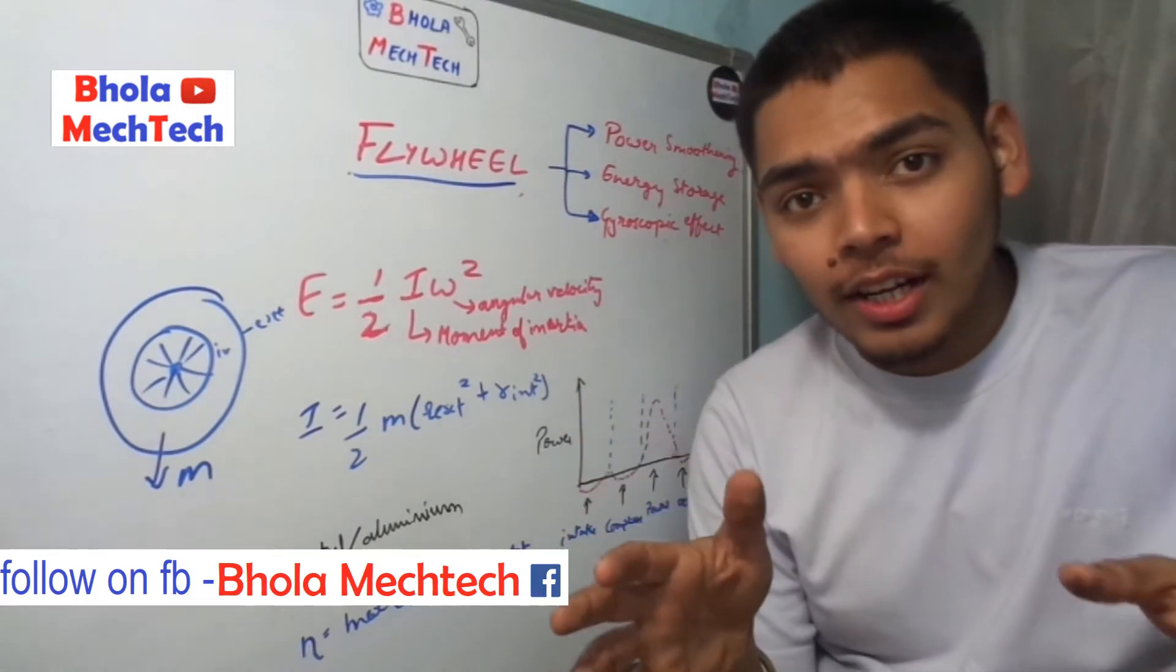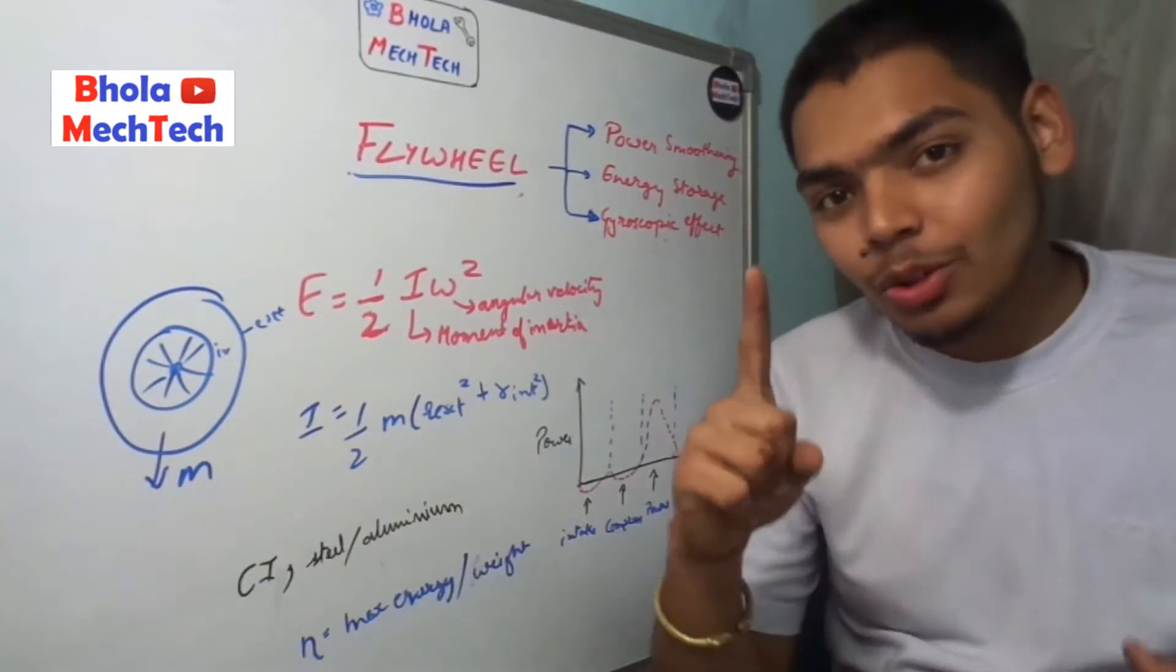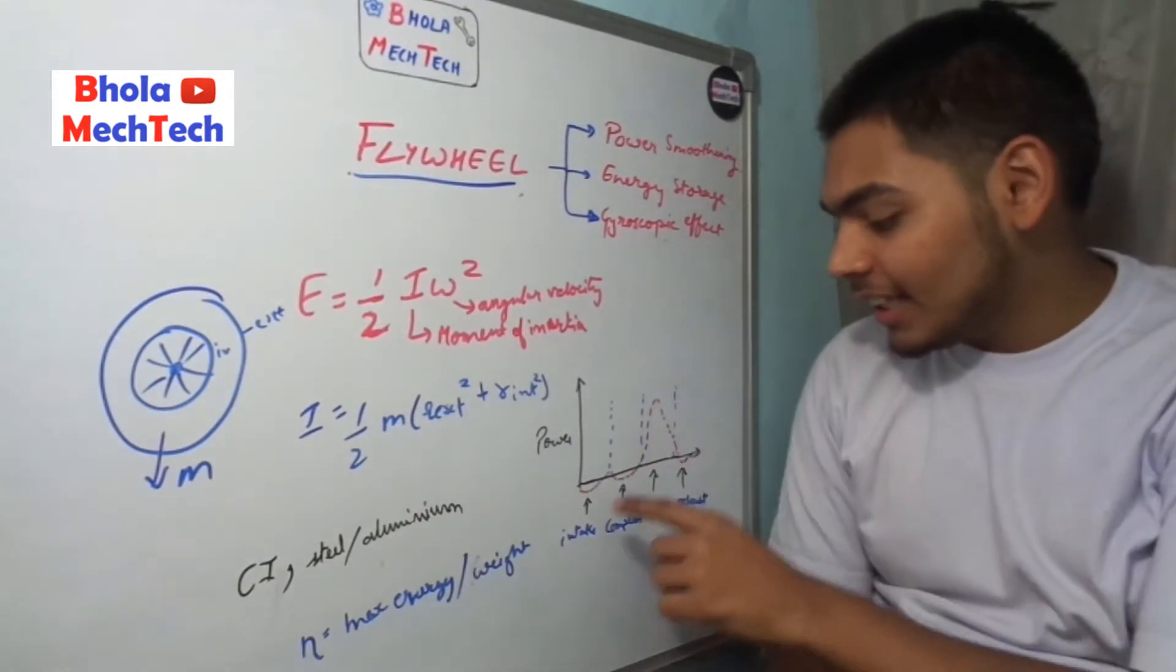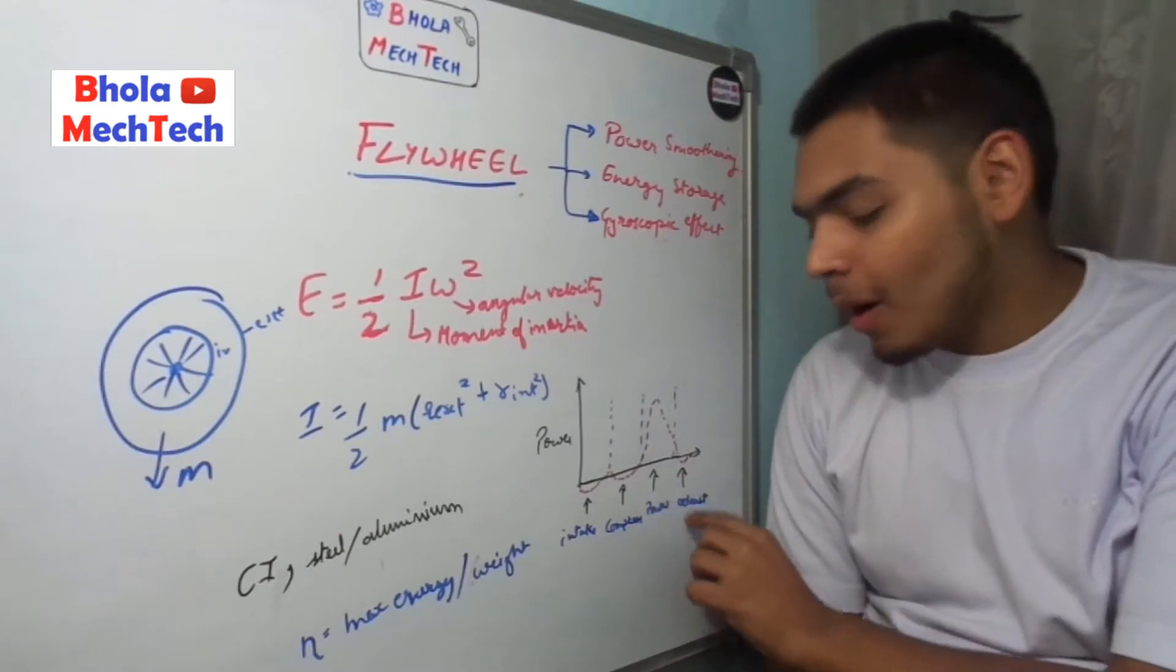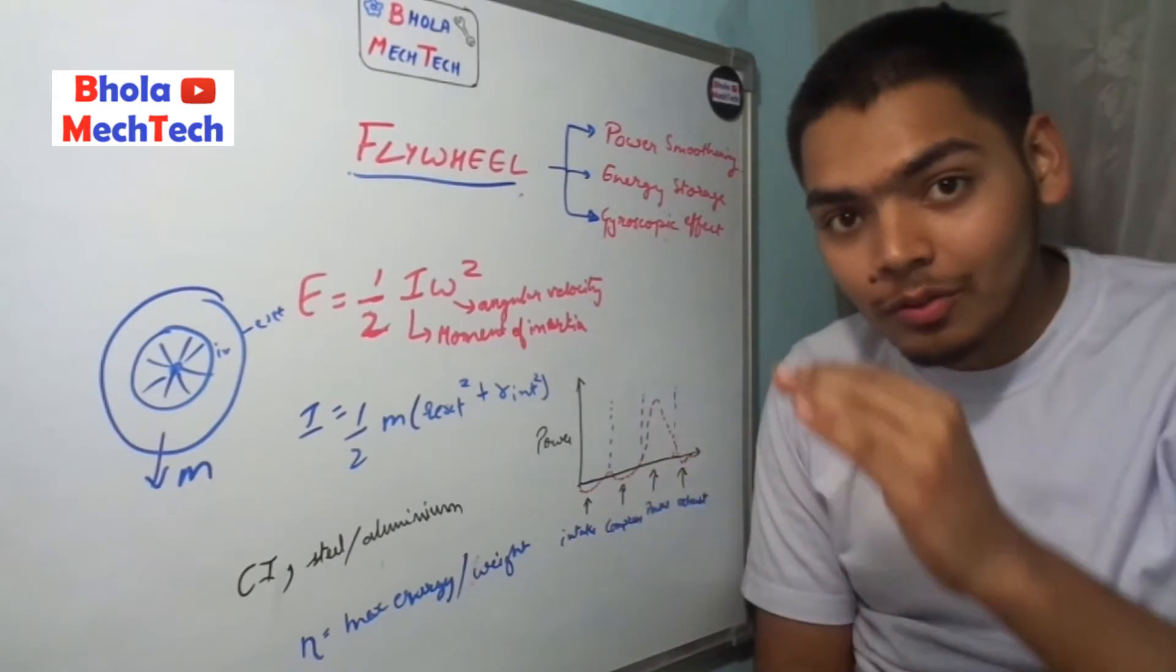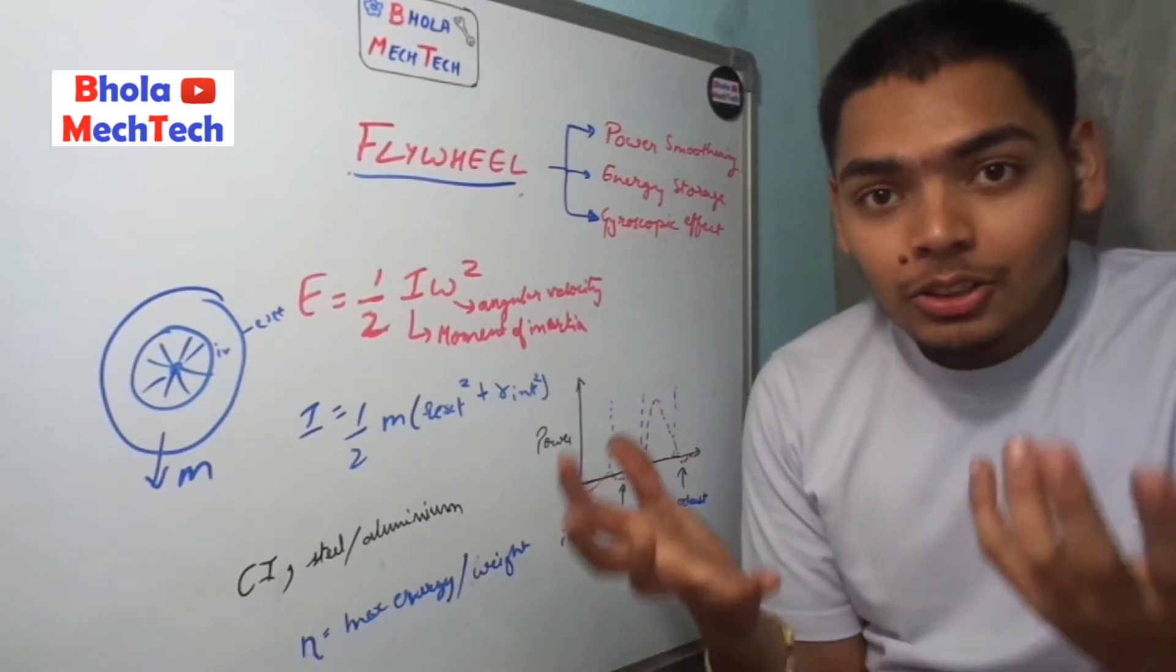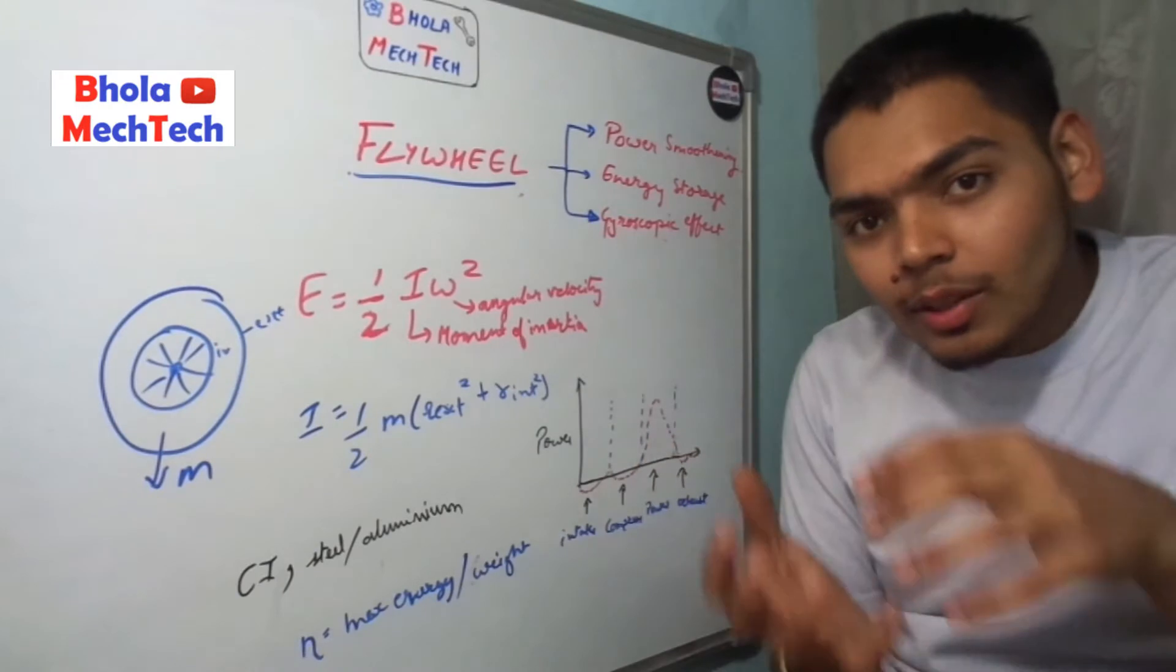First of all, the flywheel is required to store energy because the engine produces energy only in one stroke, but it has to complete four strokes: intake, compression, power, and exhaust. The power is the only stroke in which we get energy from the engine, but there are three more strokes where the piston has to go up and down. So where will the energy come from?